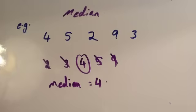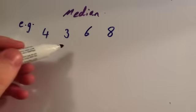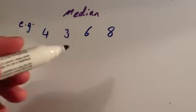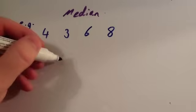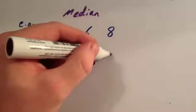Let's look at another example where you've got an even number of numbers. We're going to work out the median for the set: 4, 3, 6, and 8. The first thing to do whenever you're working out the median is to arrange them in numerical order. So the lowest value is 3, then 4, then 6, and then 8.